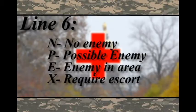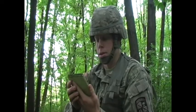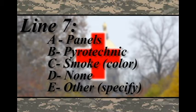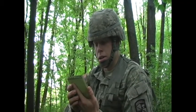Line 6 is security at the pickup site. November — No enemy in the area. Papa — Possible enemy in the area. Echo — Enemy in the area. X-ray — Enemy in the area, armed escort required. Example: Lima 6, Papa. Line 7 is the method of marking the pickup site. Alpha — Panels. Bravo — Pyrotechnic signal. Charlie — Smoke signal, designate with color. Delta — None. Echo — Other. Example: Lima 7, Charlie, Green smoke.